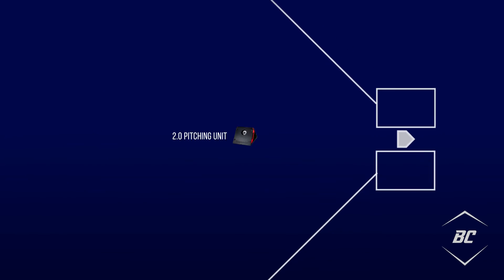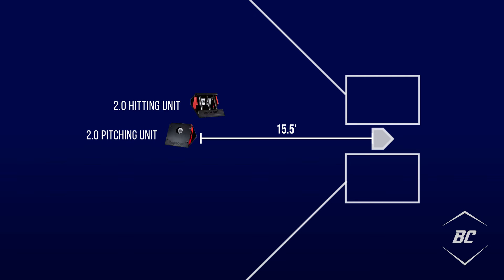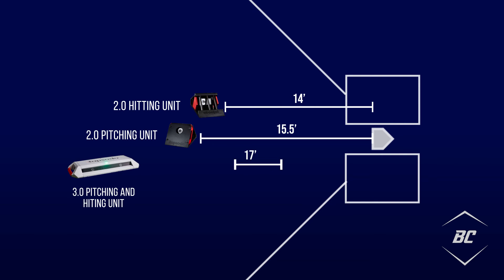The 2.0 pitching unit should be placed 15 and a half feet from home plate facing the pitcher's mound. The 2.0 hitting unit should be placed 14 feet from home plate facing the plate. And the 3.0 unit should be placed 17 feet from the front of home plate.